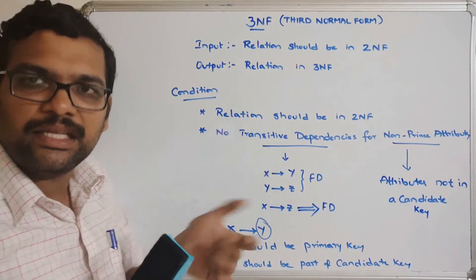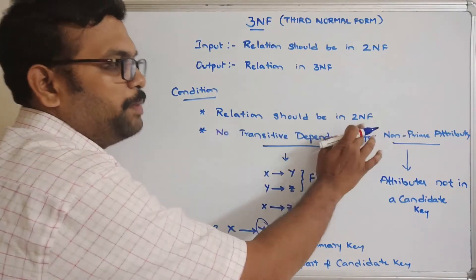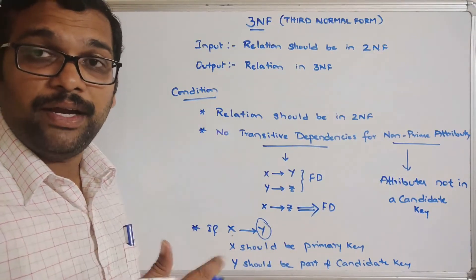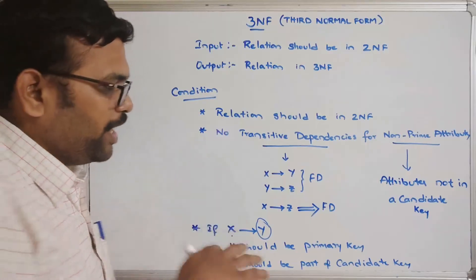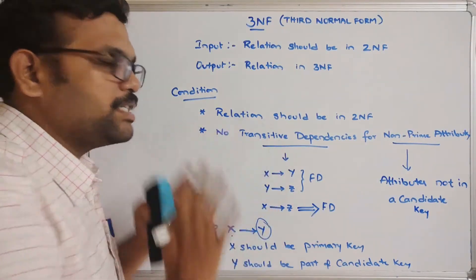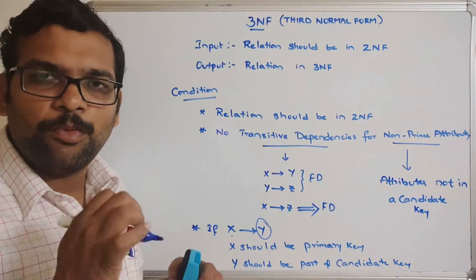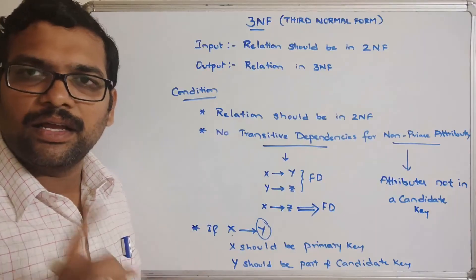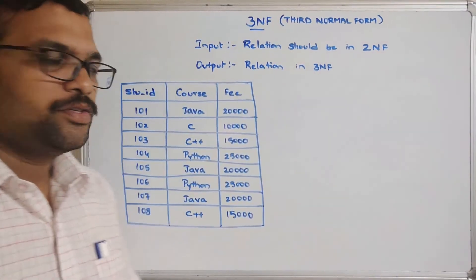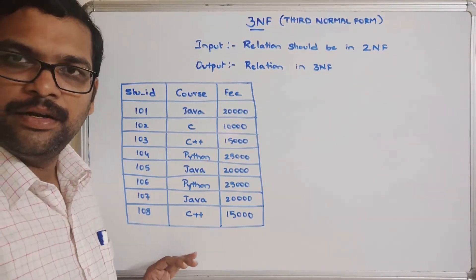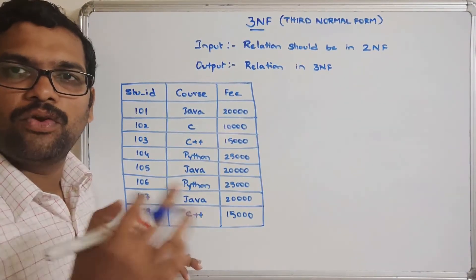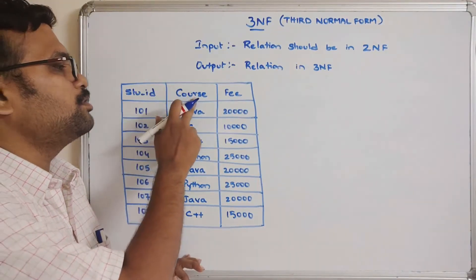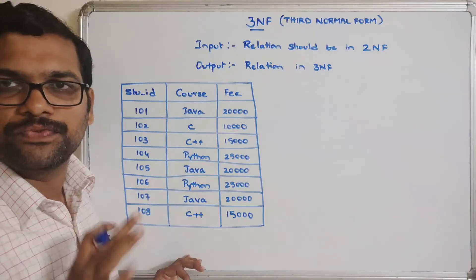To check whether a relation is in 3NF, the first condition is it should be in 2NF, and the second is there should be no transitive dependencies for all non-prime attributes. I will take a small, simple example so you can understand these two conditions clearly. Consider a relation regarding students enrolled in courses, having three attributes: student ID, course, and course fee.